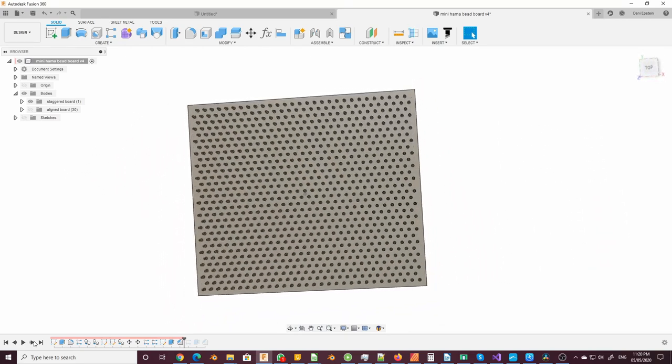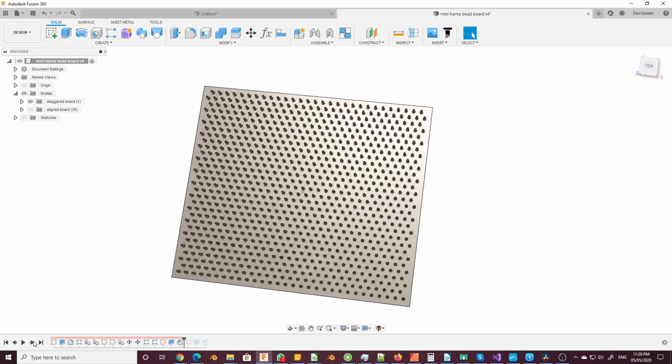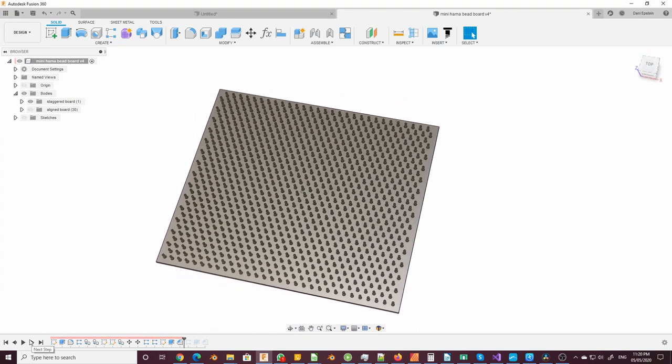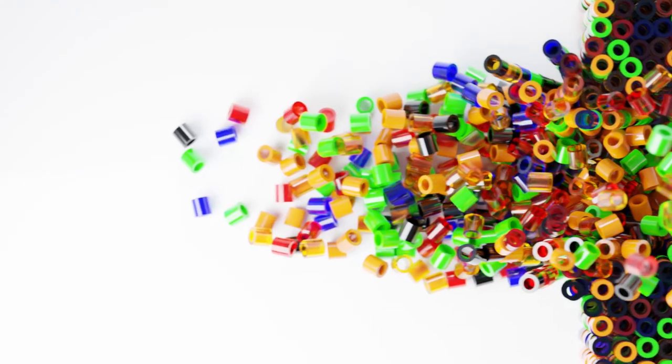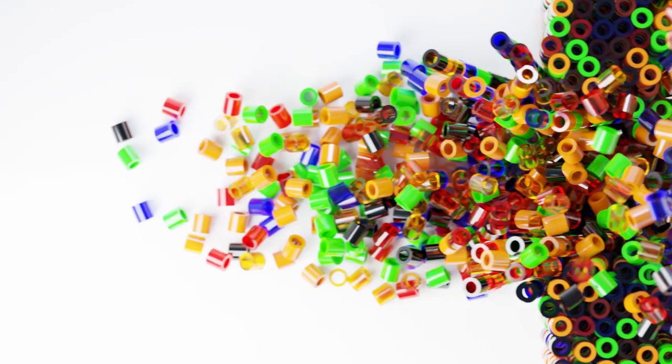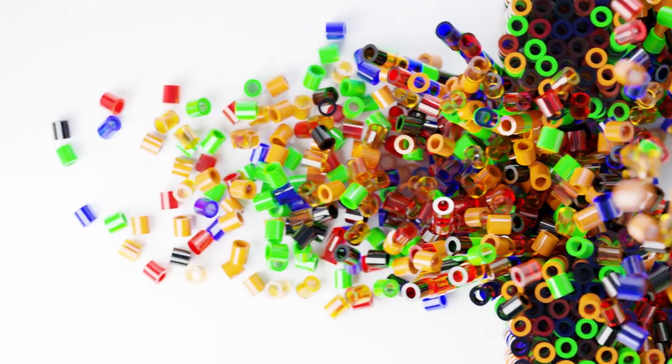So, to compensate for that, I allowed a gap of, eventually, 2.3mm, which proved to be the sweet spot. But if they're too far apart when you iron them, then the plastic won't melt sufficiently to fuse them together.